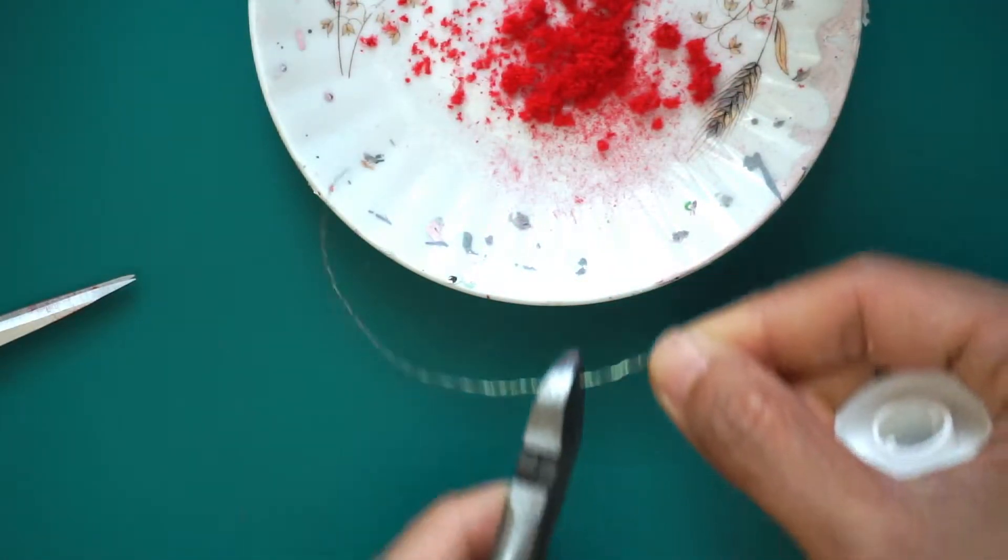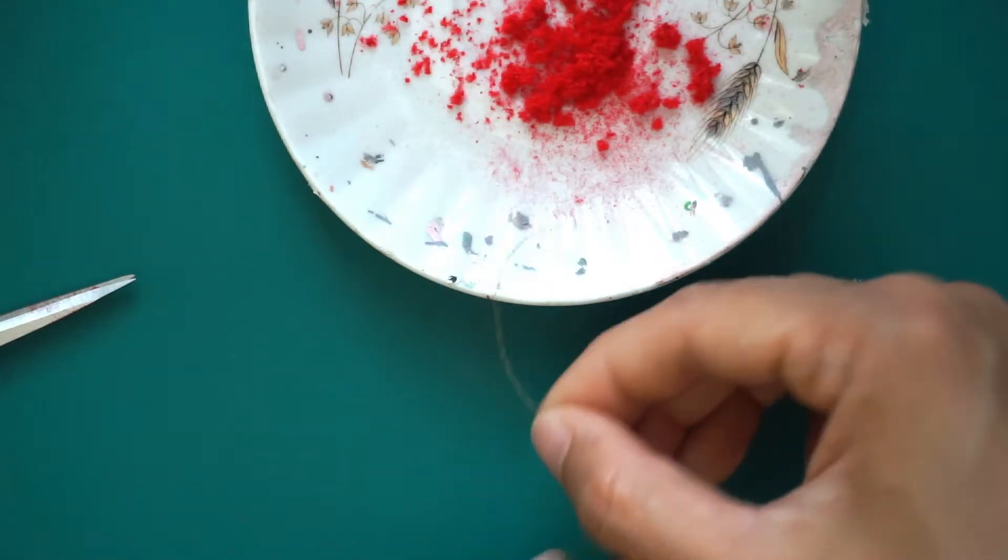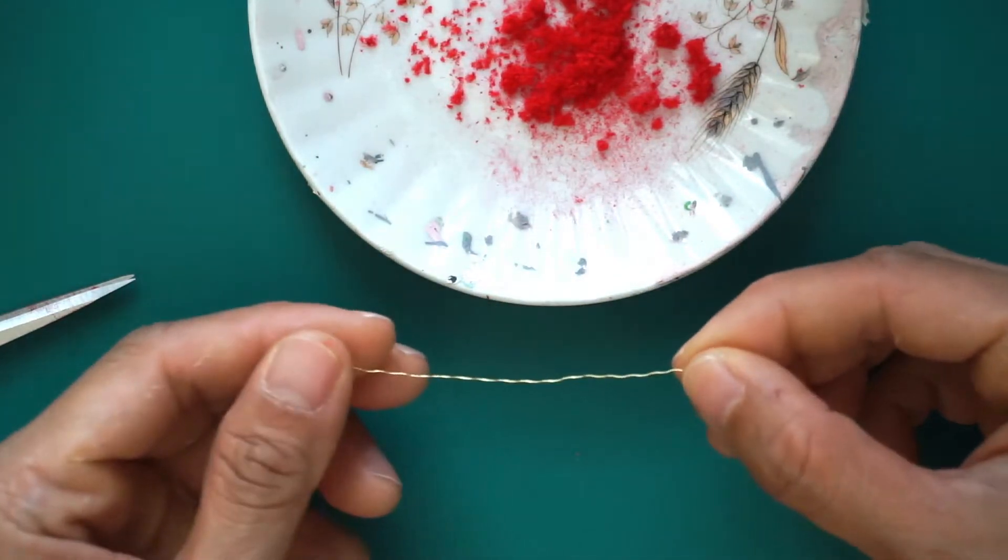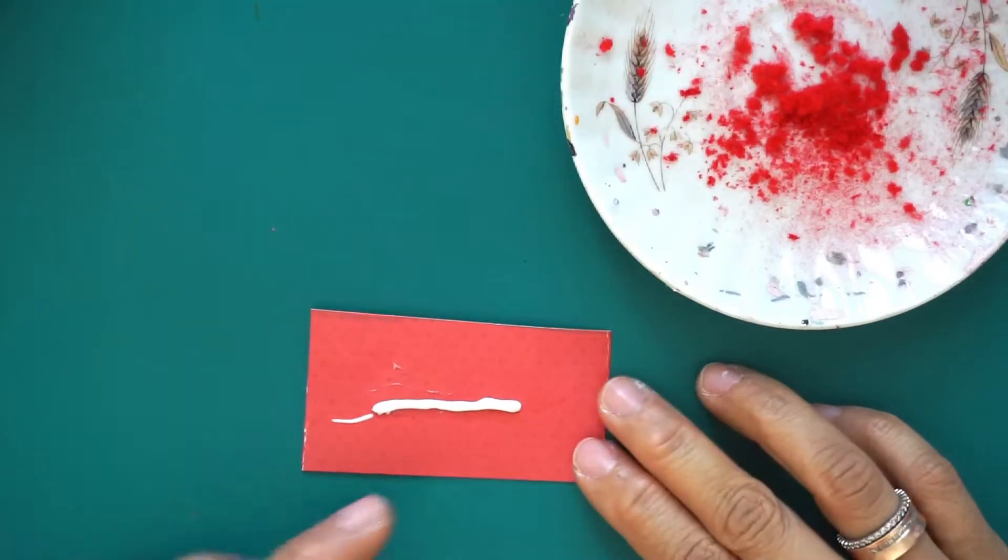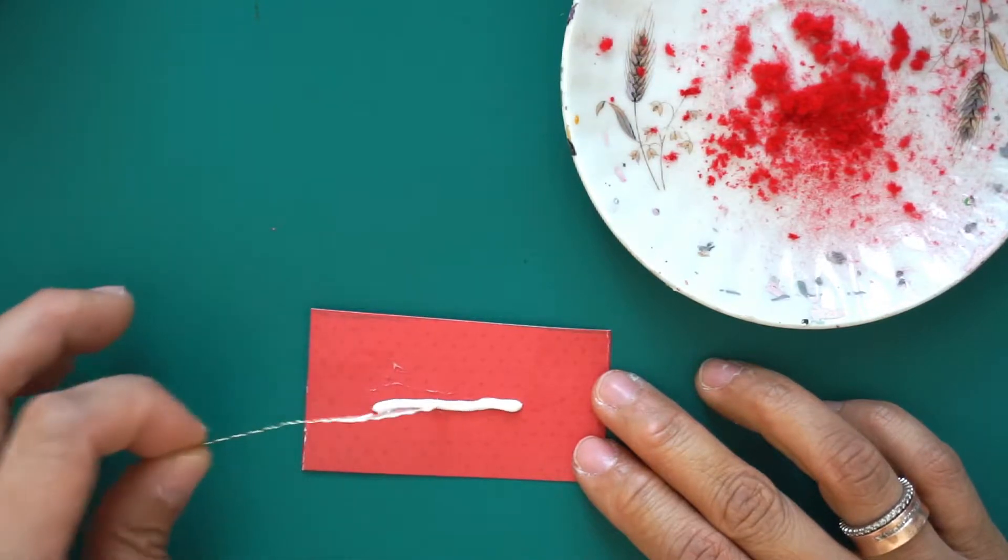Then dip the wire into the prepared glue. Make sure that the wire has a good amount of glue on it so that the tail will be bushier.